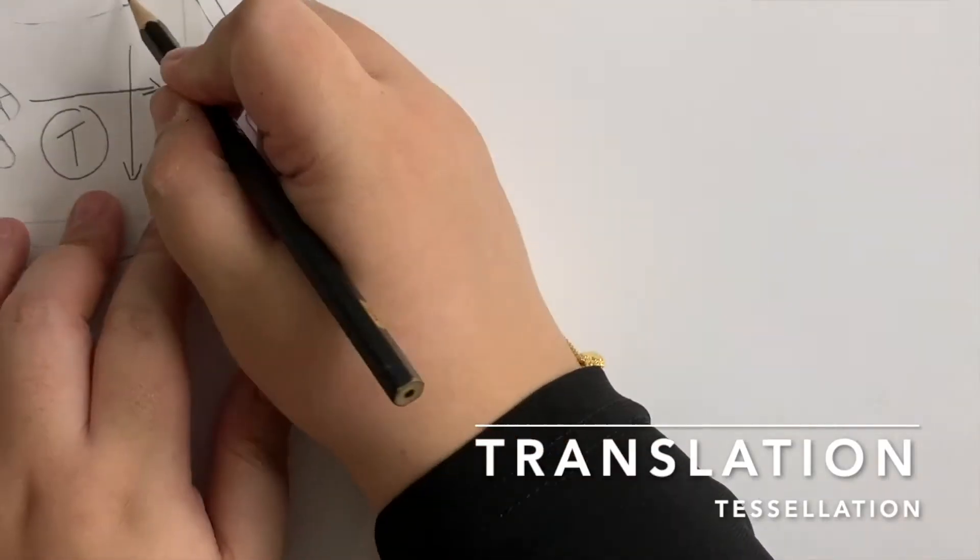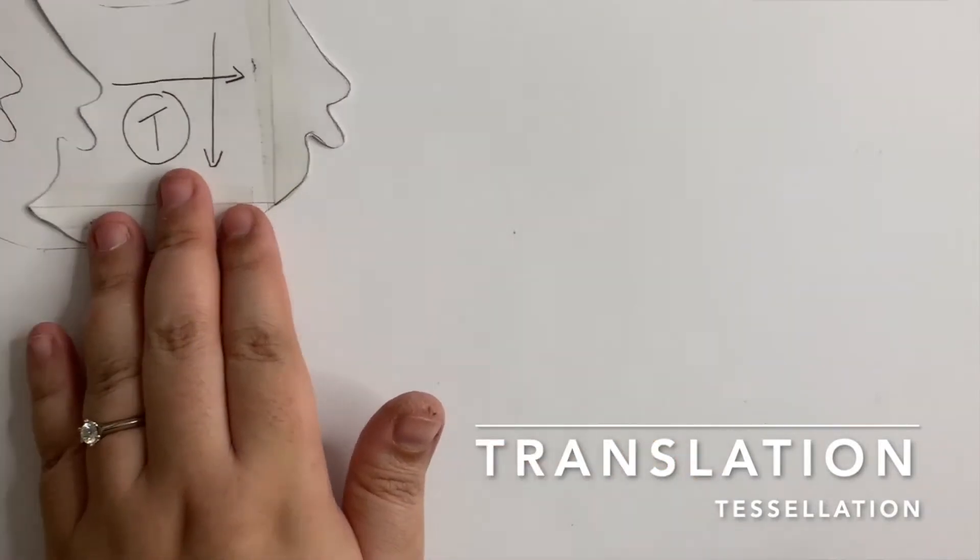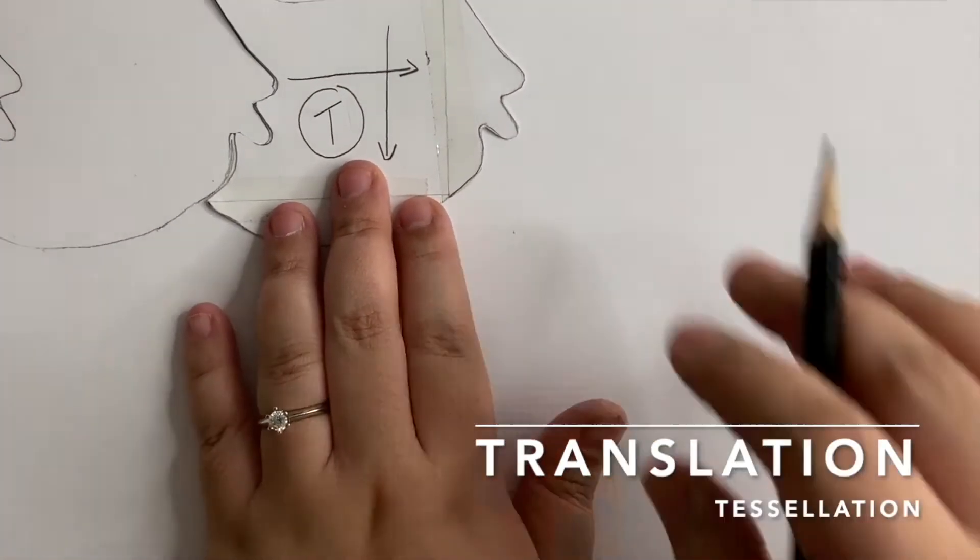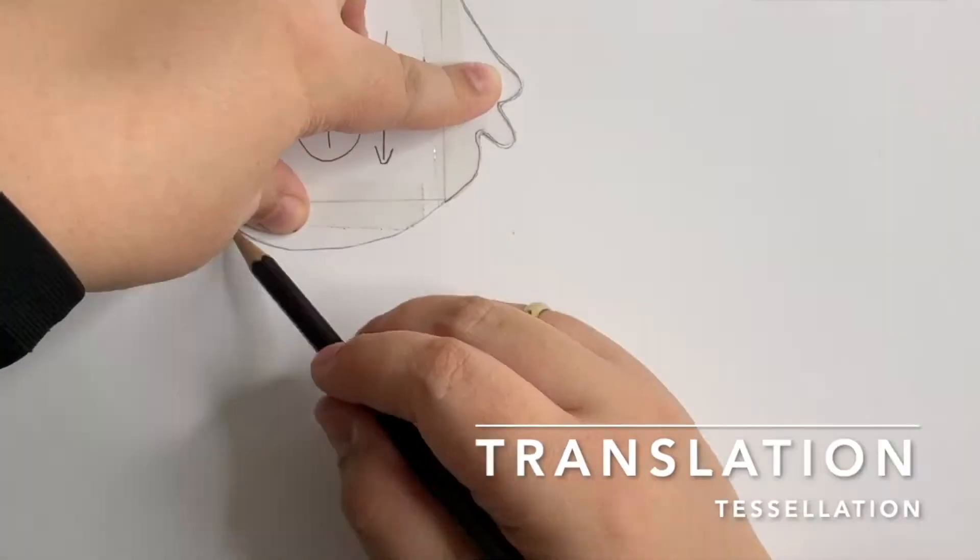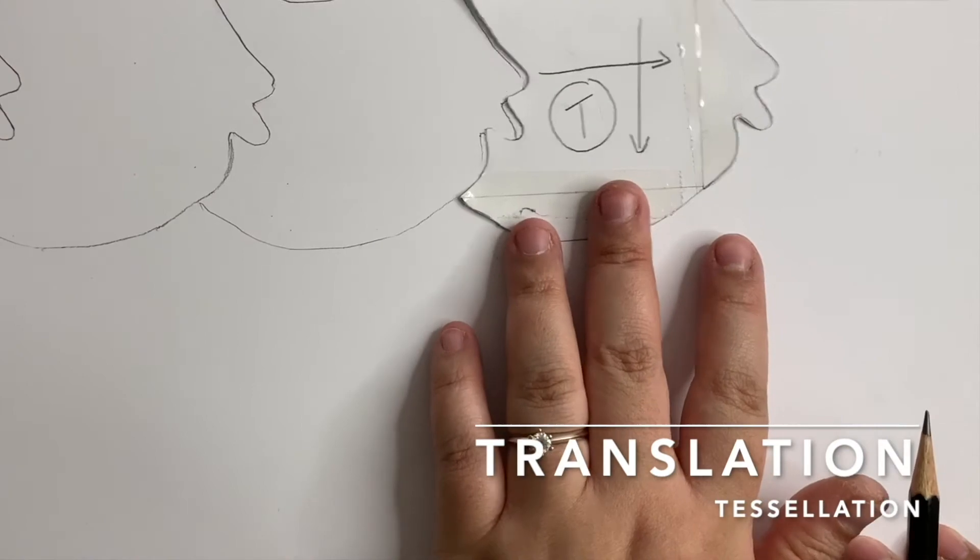Once you are done tracing, you just have to slide the template to fit your traced shape. There should not be any gaps or overlapping. Remember, slide, fit, trace.